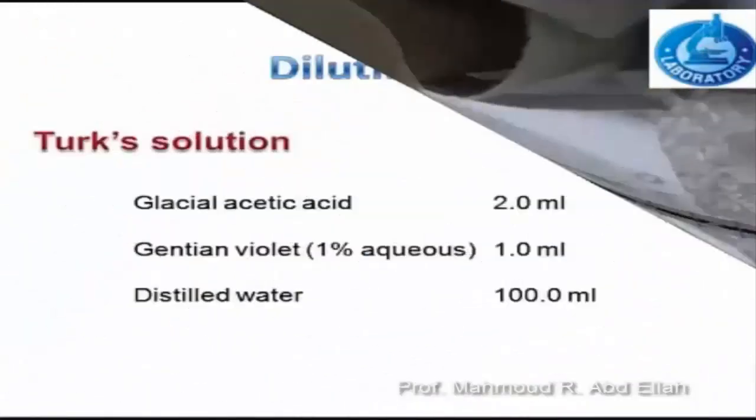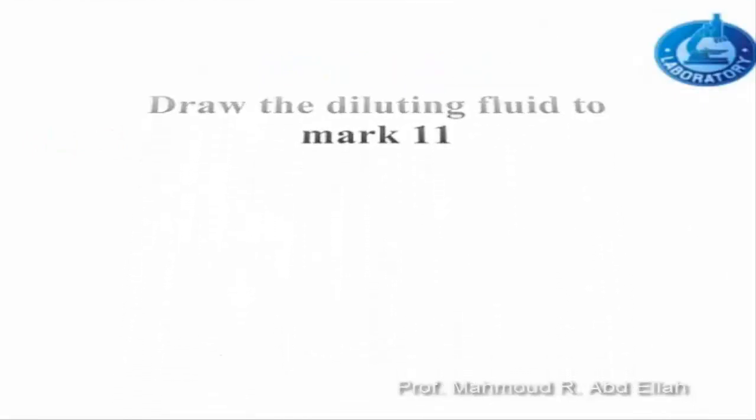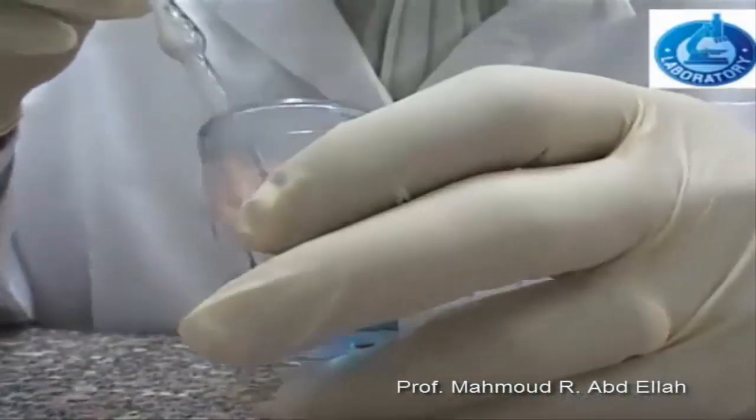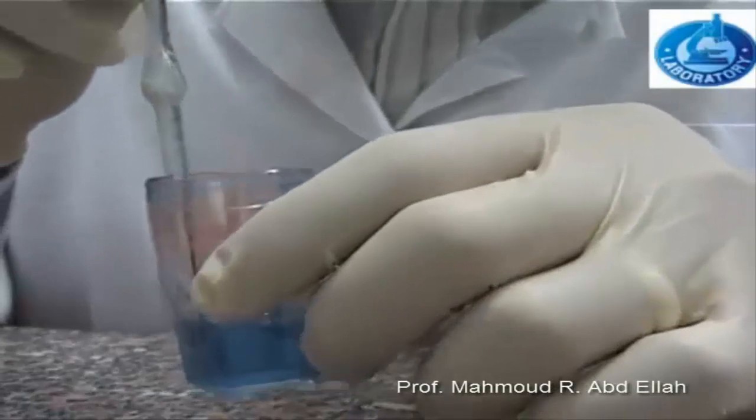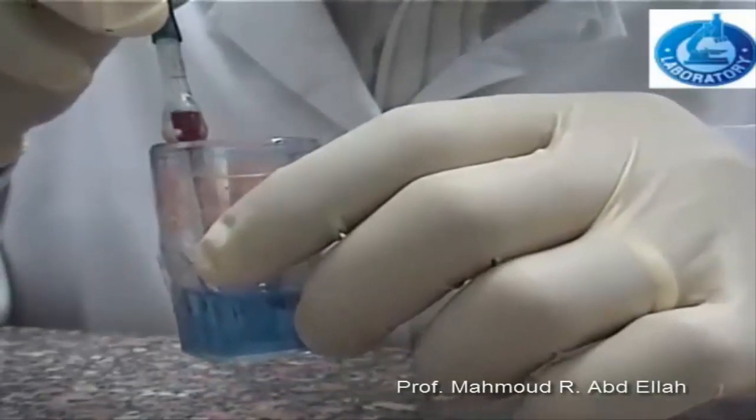The diluting fluid used here is acetic acid solution. Draw the diluting fluid to mark 11, located just above the bulb.